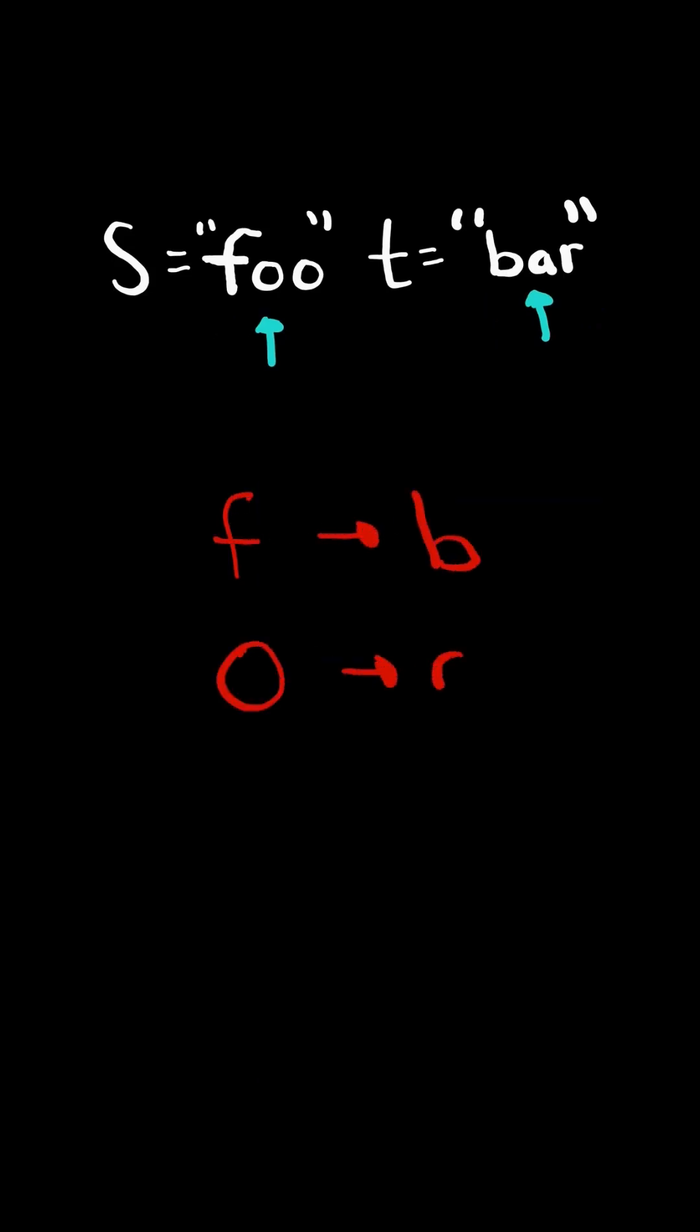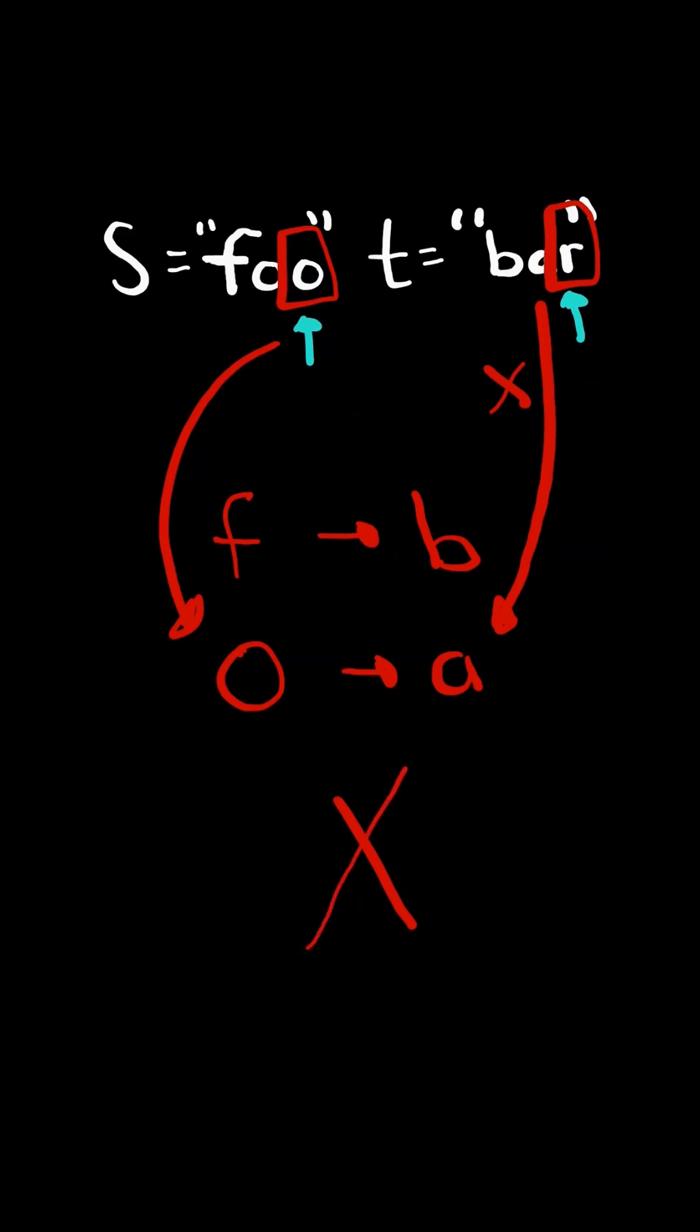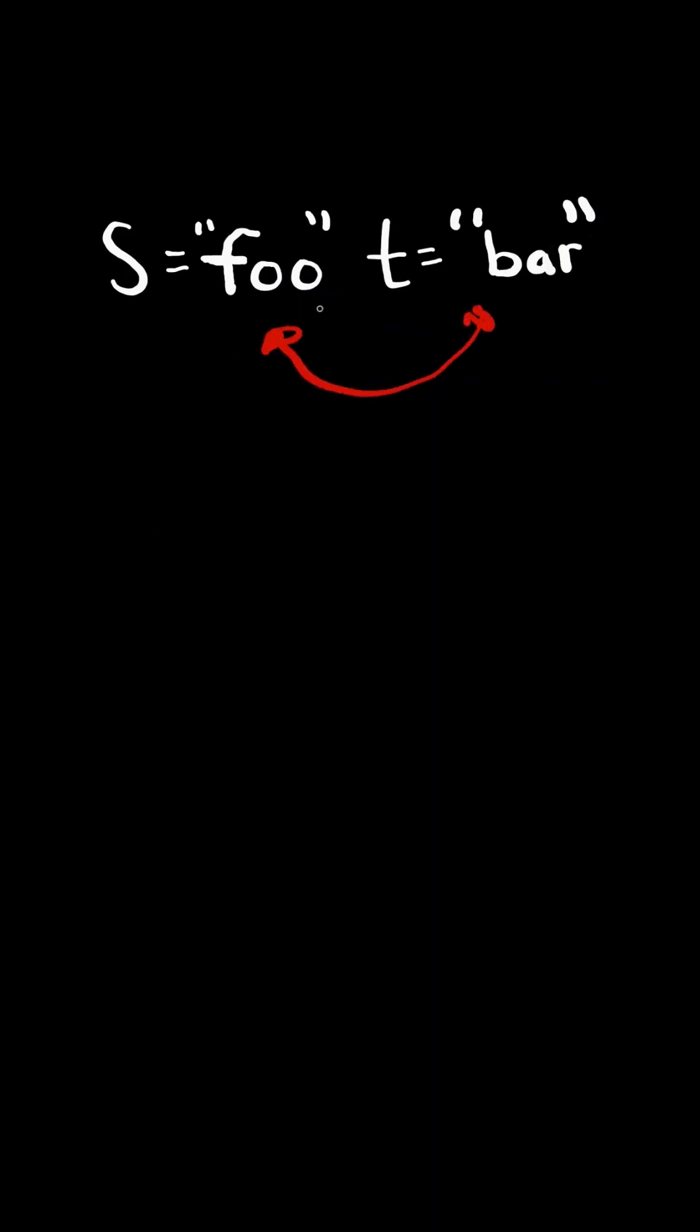We can continue this process. If we reach a character that is already mapped and it's not mapping to the same character in T, then these two strings are not isomorphic. Consider we swapped S and T.